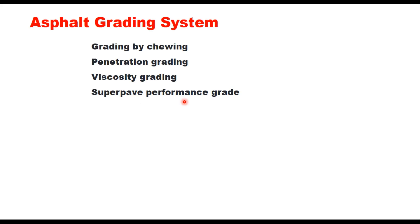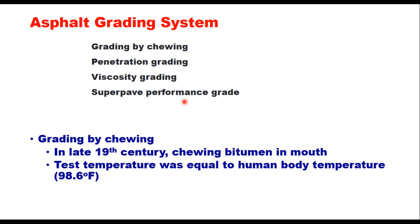Chewing was the method used to determine the stiffness — that is, hardness — of bitumen in the late 19th century. This was a time when no test equipment had been developed, and bitumen was accepted or rejected by chewing based on the experience of inspectors. The testing temperature was obviously the human body temperature, that is 37°C.